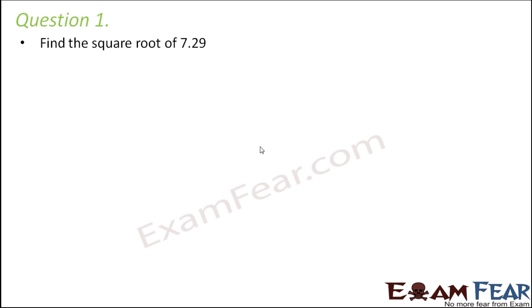So let's look at some questions based on long division method. Question number 1: Find the square root of 7.29. So first thing that we do is placing the bars. For a decimal number, the whole number part, we start placing the bar from here. For the decimal part, we start placing the bar from here.